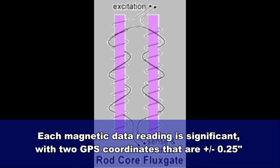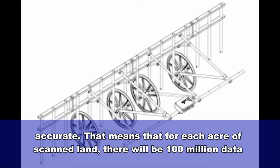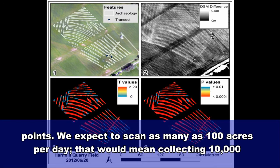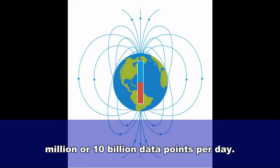Each magnetic data reading is significant, with two GPS coordinates that are plus or minus 0.25 inches accurate. That means that for each acre of scanned land, there will be 100 million data points. We expect to scan as many as 100 acres per day, that would mean collecting 10,000 million or 10 billion data points per day.